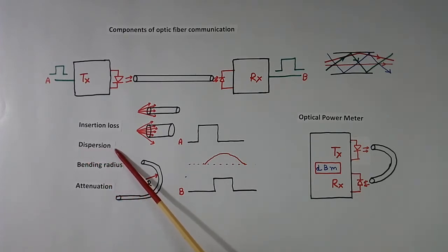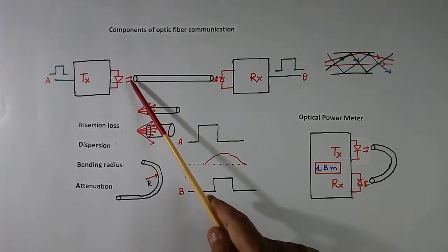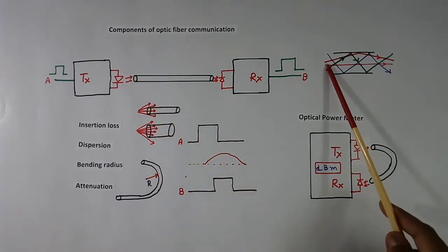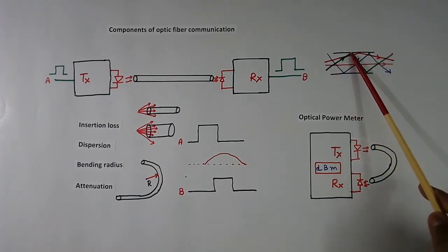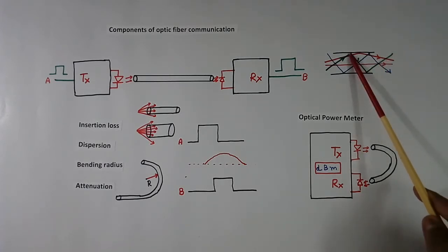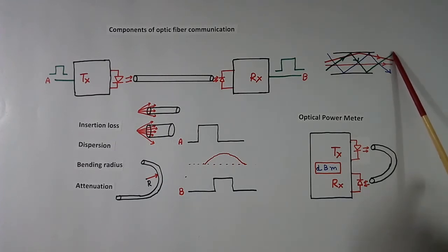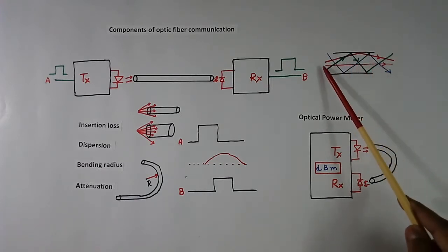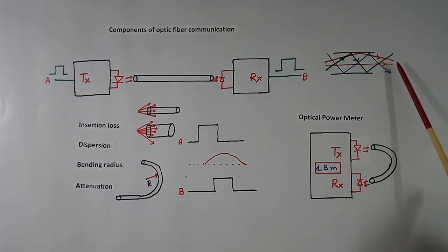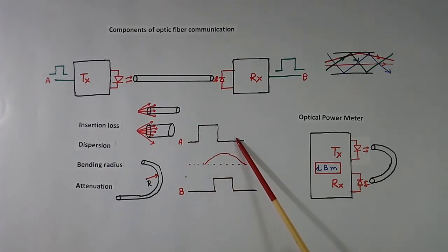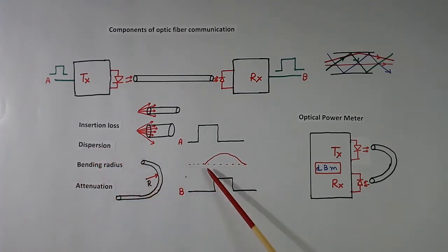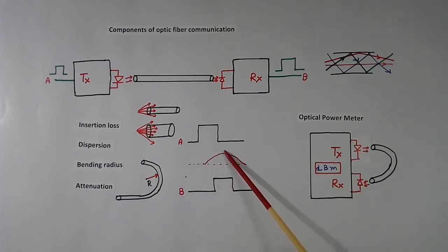Then there is dispersion. When light travels inside the fiber, some light goes straight and some travels at an angle, so it covers a longer distance and arrives later. Many light signals from the same original signal reach the receiver at different times. When we send a clean electrical signal, at the output we receive a dispersed optical signal — this is called dispersion. The receiver then converts this back into an electrical signal.